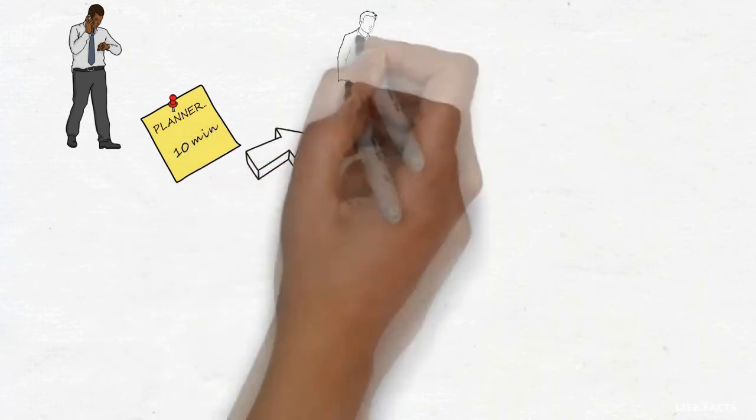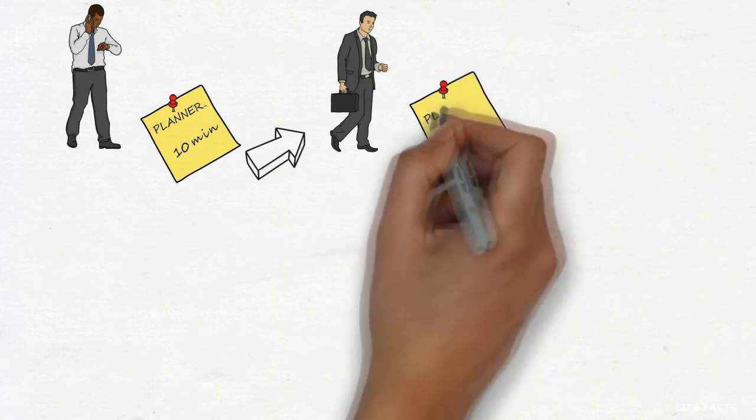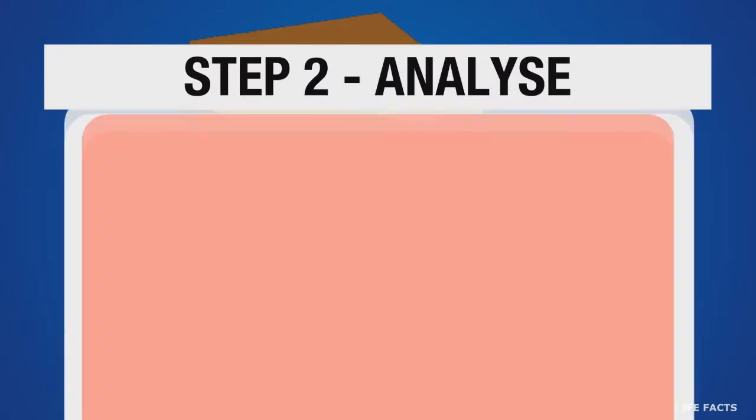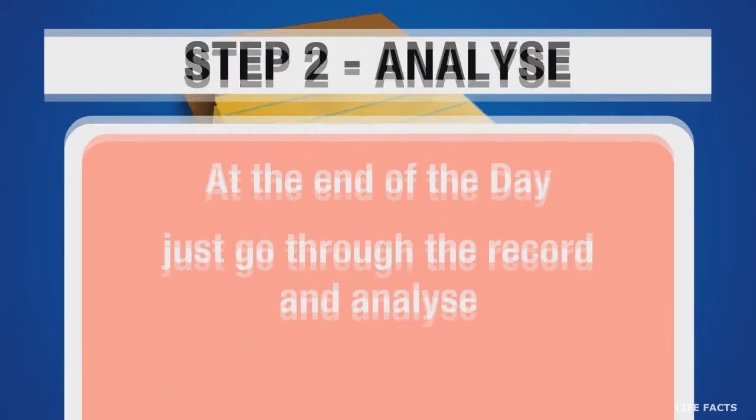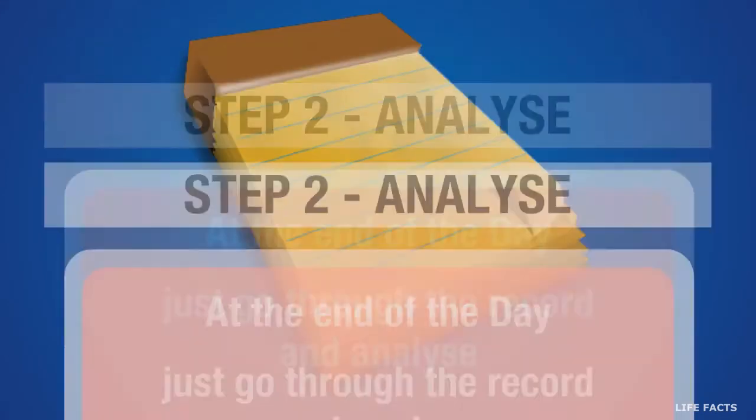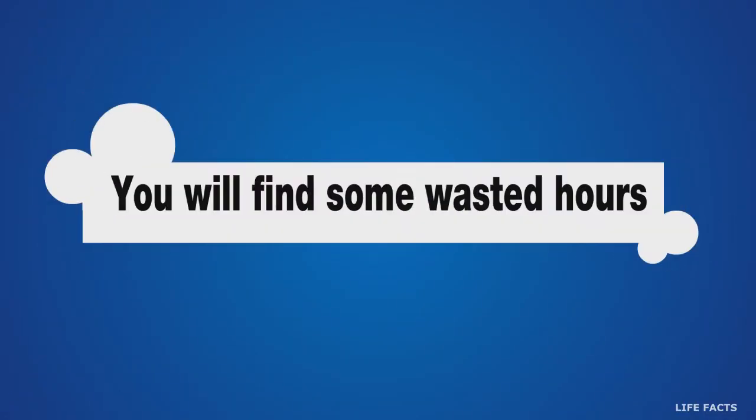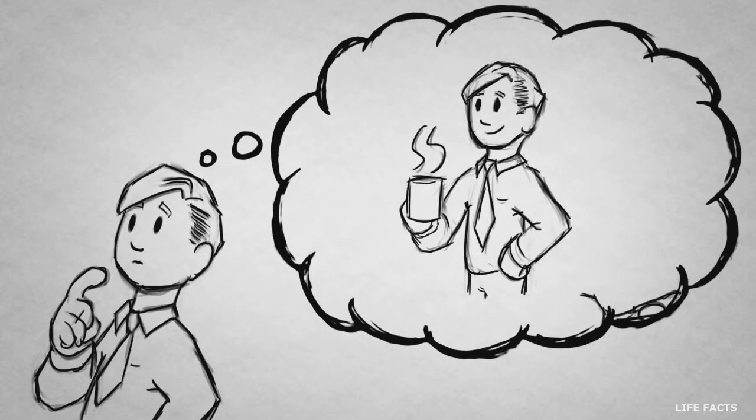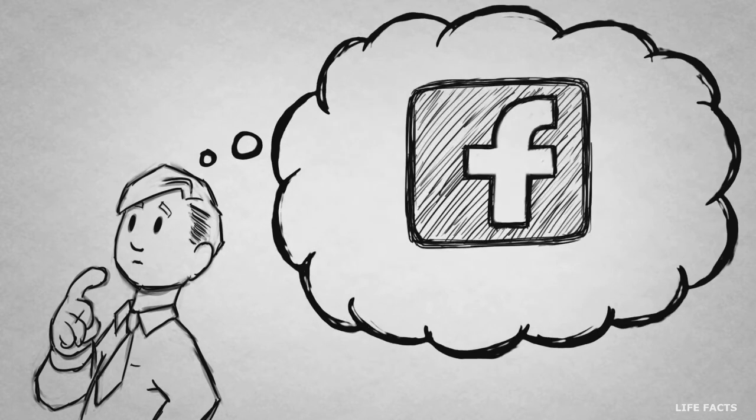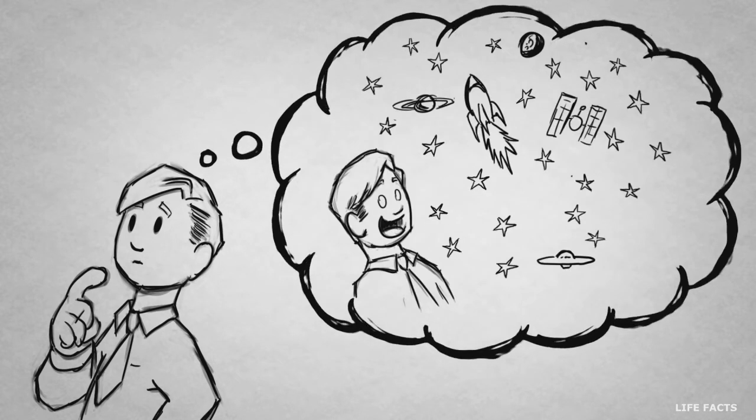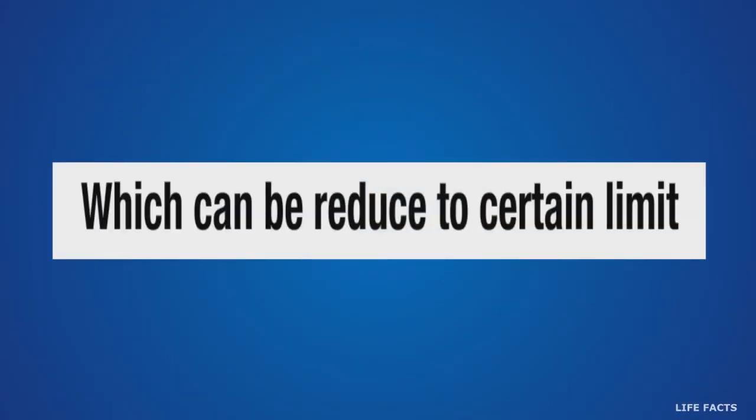Just record in a book, like a list of it, hour by hour. Analyze. The second step is analyze. At the end of the day, just go through the record and analyze where you have wasted time. You will find some wasted hours, maybe for social networking like this one, and you will realize how much time you have spent on things which can be reduced to a certain extent or certain limit.